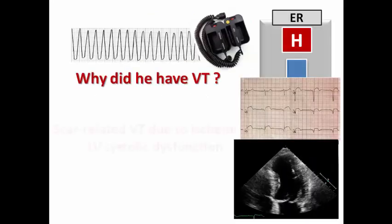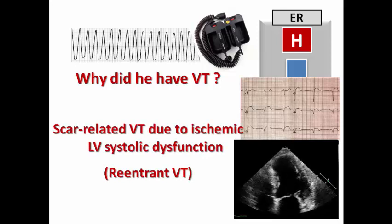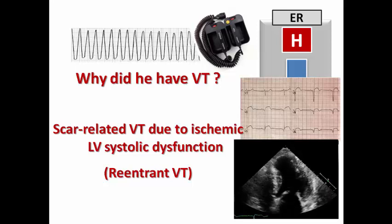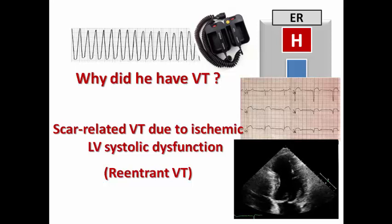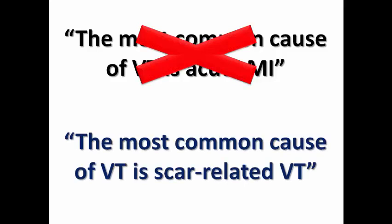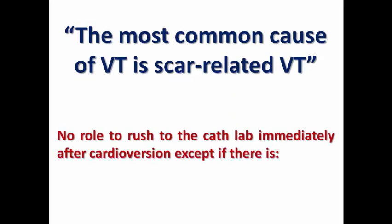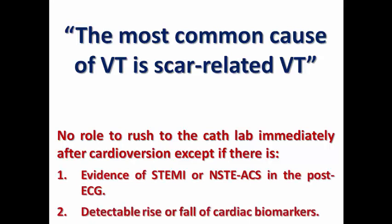So why did our patient have VT? He had scar-related VT due to ischemic LV systolic dysfunction from anterior STEMI, with a likely delay in revascularization resulting in severe LV dysfunction, akinetic thinned-out segments, and scar tissue causing re-entrant VT — not new acute MI. Therefore the most common cause of VT is not acute MI but scar-related VT, and there is no need to rush to the cath lab immediately after cardioversion unless there is evidence of ischemia such as ST elevation, dynamic ECG changes, or detectable rise or fall in cardiac biomarkers. Otherwise, consider ICD or antiarrhythmic medication.